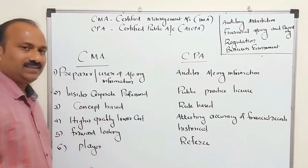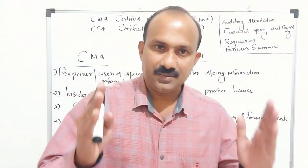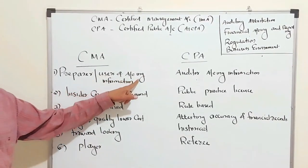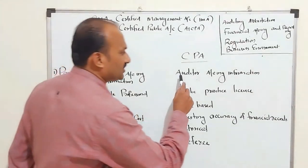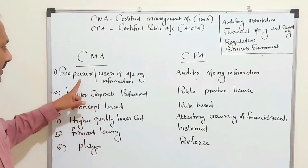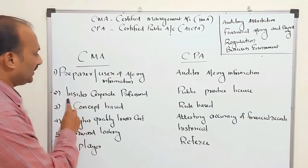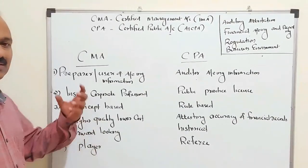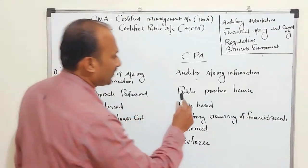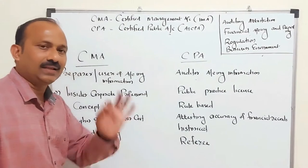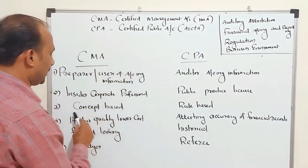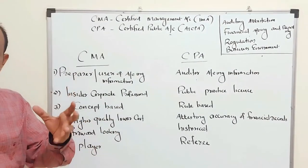What is the major difference between CMA and CPA? CMA holders are known as the preparers or users of accounting information. But CPA holders are known as auditors of accounting information. CMA holders are insider corporate professionals — key people inside companies. CPA holders have a public practice license and can independently practice.